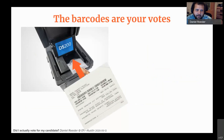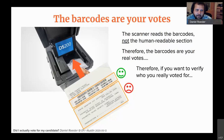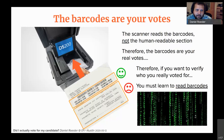When I looked at the system and reached out to the Travis County clerk and the vendor, I realized the barcodes are actually what the scanner reads — not the human-readable section. The scanner reads the barcodes, and therefore the barcodes are your real votes — the things that actually get counted. So if you want to verify who you voted for, you need to learn to read barcodes.